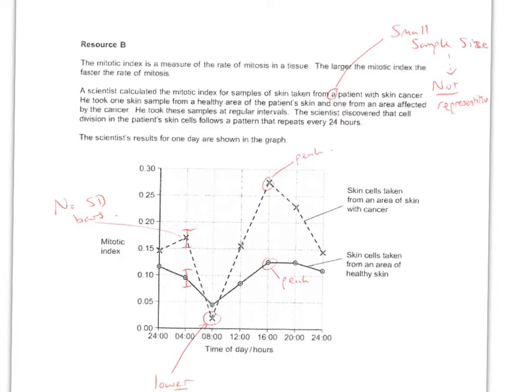The last question is evaluate skin cells from cancerous tissues grow at a faster rate. So the agree point would be at most of the time, all times apart from 8 o'clock in the morning skin cancer cells have a higher mitotic index. And then an obvious disagree point would be however at 8 o'clock in the morning they have a lower mitotic index. That's the one point that doesn't agree.